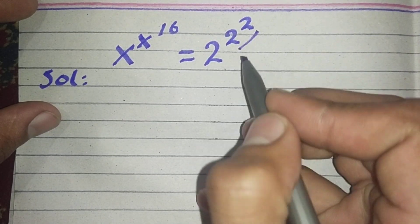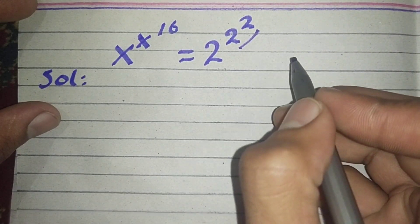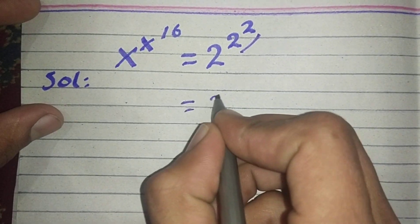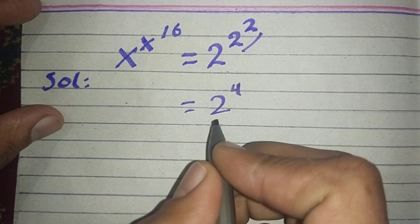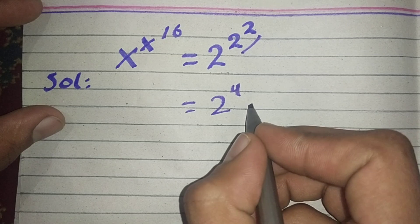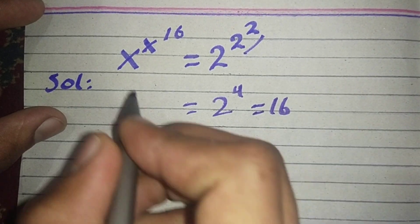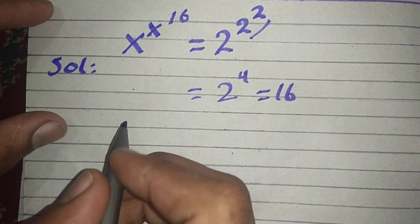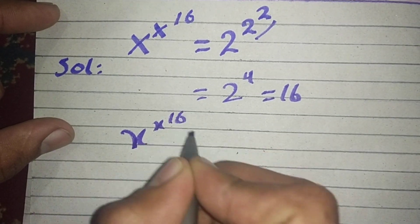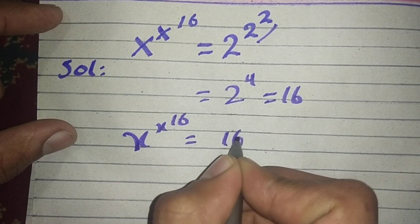We know that 2 power 2 is equal to 4, so it becomes 2 power 4, and 2 power 4 is equal to 16. So the equation becomes x power x power 16 equals 16.